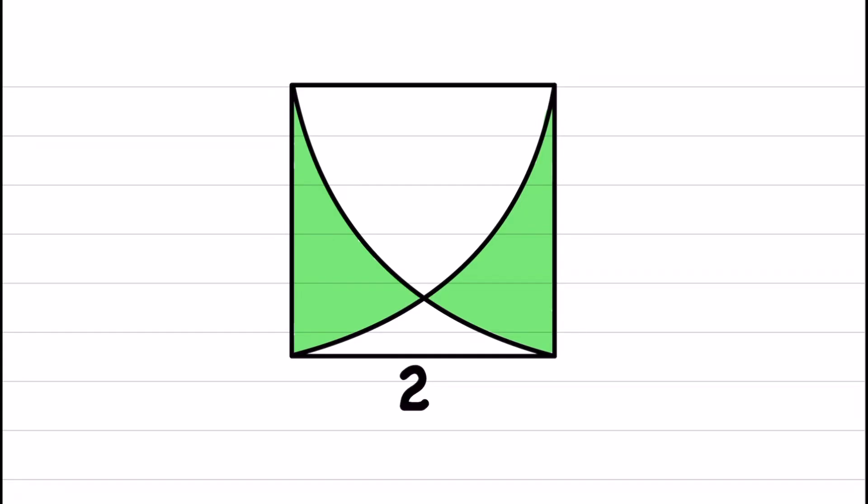Welcome to a new episode of Mathedartic. In this question, a square is given with side length 2, and two quarter circles as shown. The question asks to find the area of these colored segments.